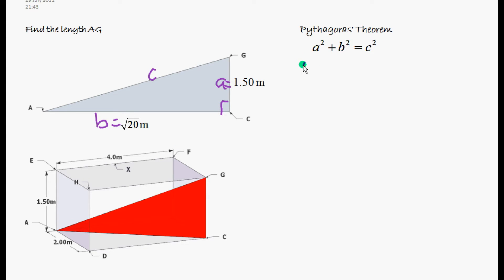So A is 1.5. Put 1.5 in for A, and we're going to square that. And B is equal to the square root of 20. So if we square that, we will get 20. And this is equal to C squared.